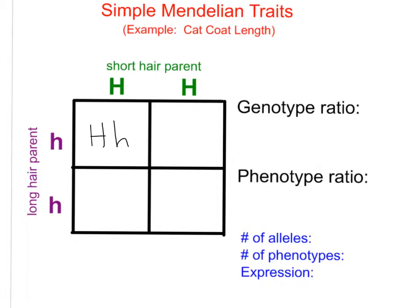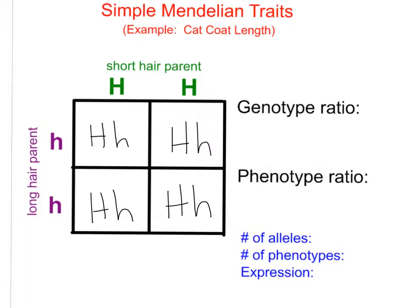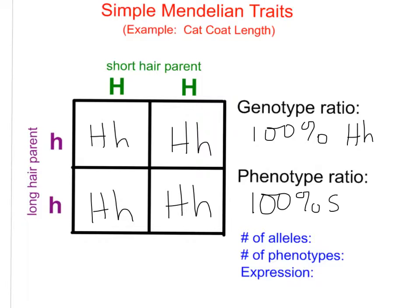When we fill out our Punnett squares, with the short-hair parent on one side and the long-hair parent on the other side, they are both homozygous for their respective alleles — homozygous dominant and homozygous recessive. We end up getting all heterozygous offspring. All of them, 100%, are heterozygous for the genotype. The phenotype will be 100% short hair because they all possess that dominant short-haired allele.